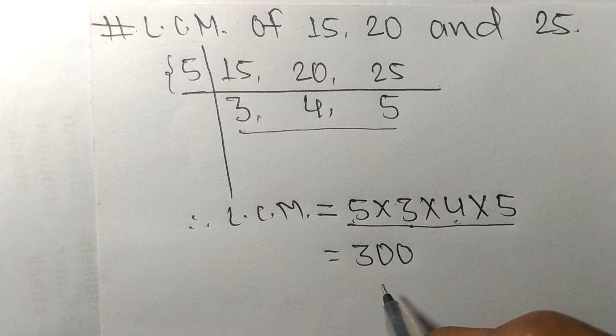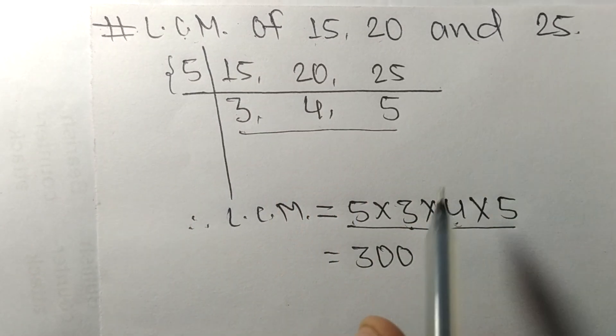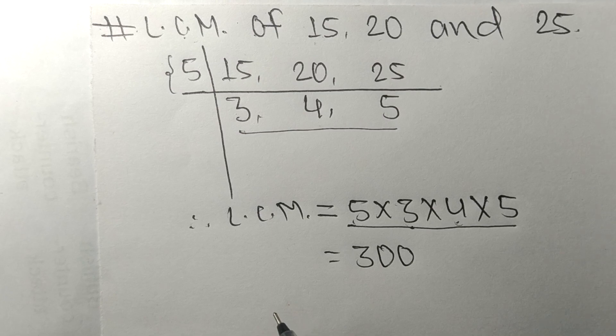So 300 is the LCM of 15, 20, and 25. So this much for today and thanks for watching.